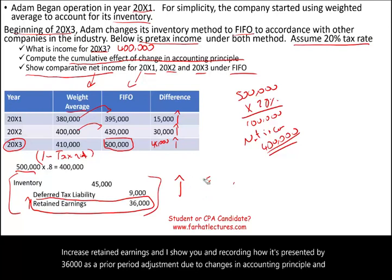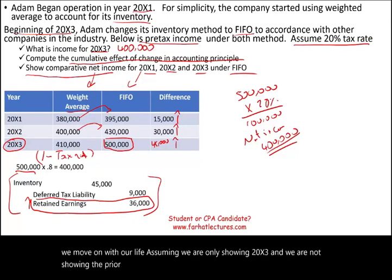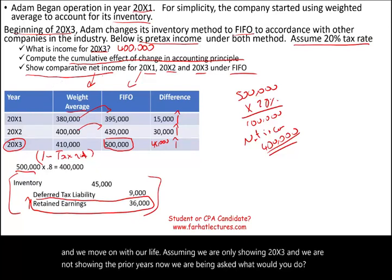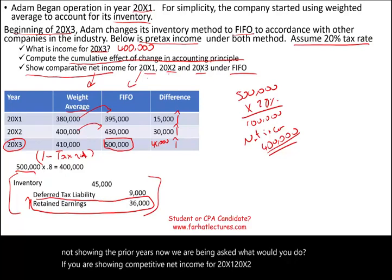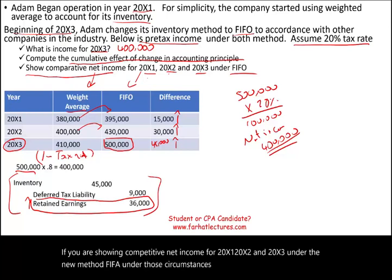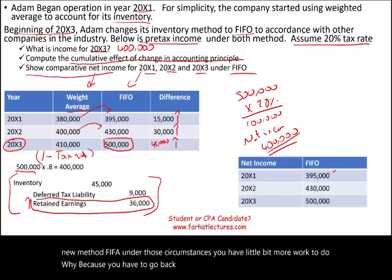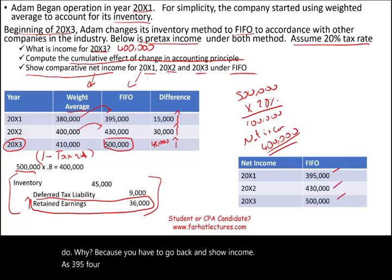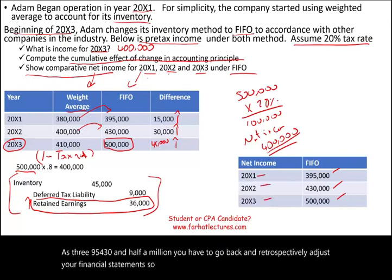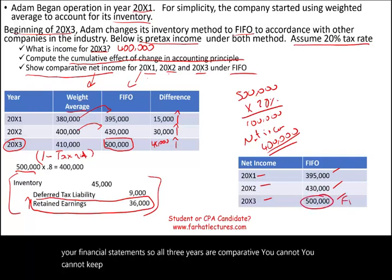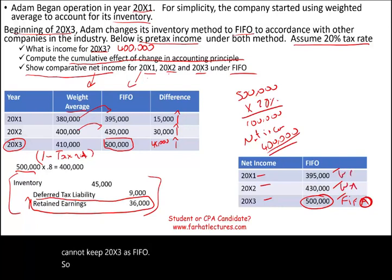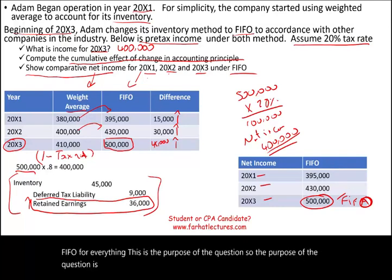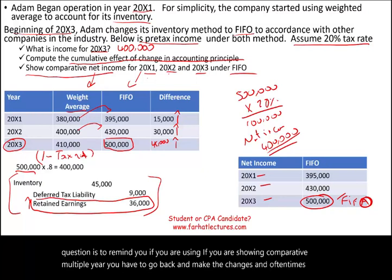Assuming we are only showing 20x3, we move on with the $36,000 prior period adjustment. But if we are showing comparative net income for 20x1, 20x2, and 20x3 under the new method FIFO, there is more work to do. You have to go back and retrospectively show income as $395,000, $430,000, and $500,000. You cannot keep 20x3 as FIFO while using weighted average for the other two years — you must use FIFO for all years. This illustrates the purpose of retrospective adjustment: all comparative periods must be restated, which is often not easy for a company, especially when it comes to inventory.